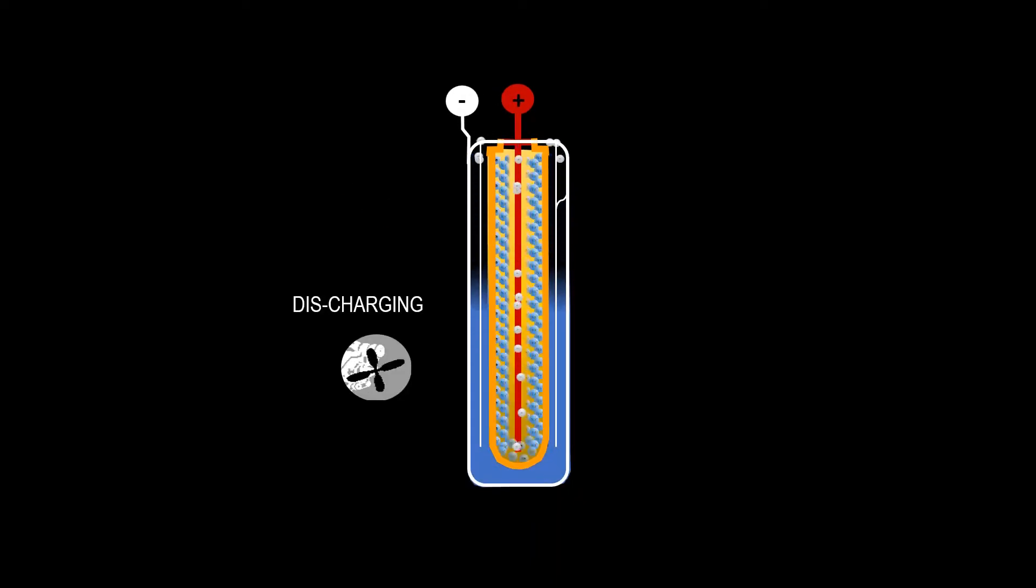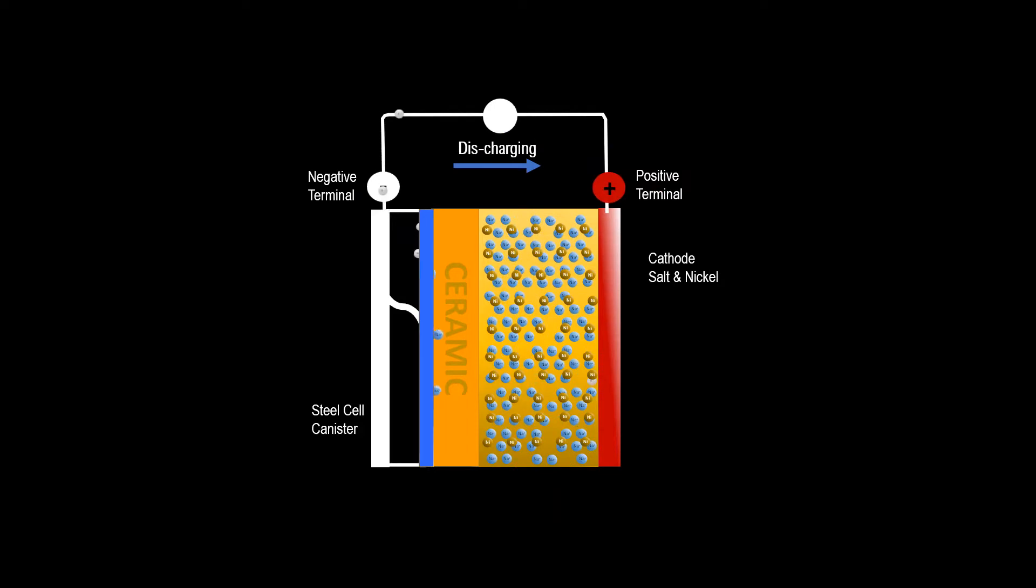During discharge, electrons flow back to the positive terminal, while sodium ions transfer back through the ceramic tube to the cathode section, joining once again with the chloride and transforming back into salt.